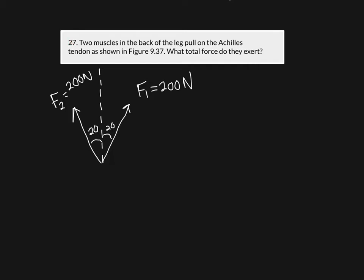This is from the OpenStax College Physics open-source textbook, problem 27, figure 9.37. I've redrawn it below for convenience. The question asks: what total force do the two forces acting on the Achilles tendon actually exert? I want to add up these two forces, F1 and F2. To do that, I need to break them up into components.